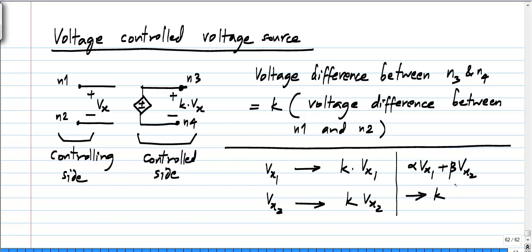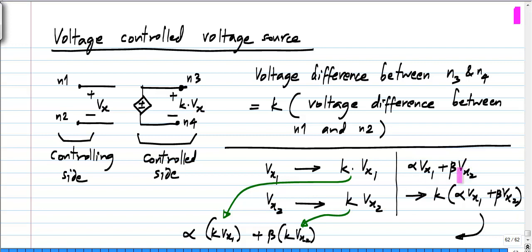Obviously, this results in a controlled voltage which is k times alpha Vx1 plus beta Vx2, which you see is the linear combination. Linear combination of the inputs gives you the same linear combination of the result. This is a linear element. And this must be pretty obvious from the relationship itself, because k times Vx is a linear function of Vx.